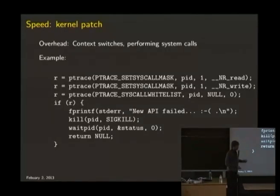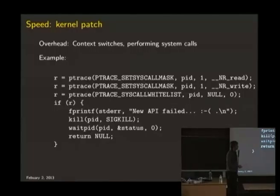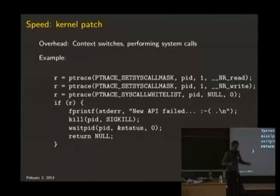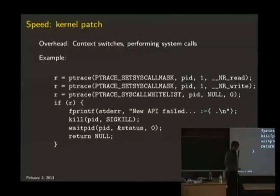Speed is an issue at times. I wrote a small kernel patch that allows you to tell ptrace to notify you only of certain system calls — a whitelist or blacklist — and that really improves speed if you just want to trace read and write. It's not completely stable yet and I wrote it in about two days, but it does work.